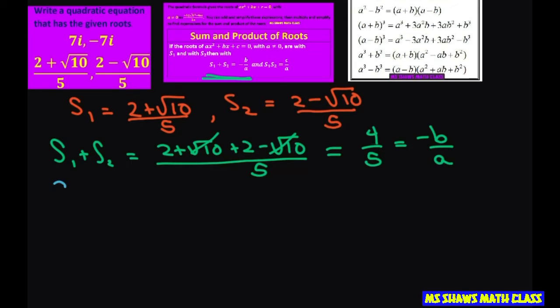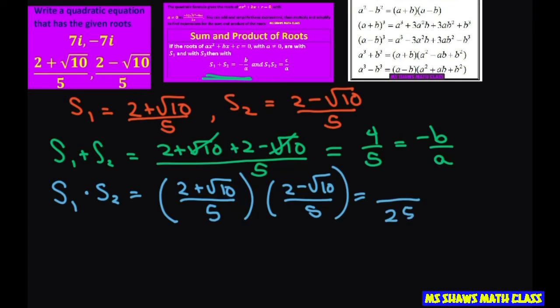Now let's multiply these two. So we get 2 plus square root of 10 divided by 5 times 2 minus square root of 10 divided by 5. This is going to give you 25 in the denominator, and we're using this formula to write this as a squared minus b squared. So you take your 2 squared minus square root of 10 times square root of 10, which is just 10. So this is going to be negative 6 divided by 25. This is your c divided by a.